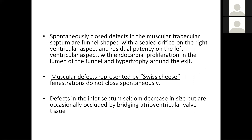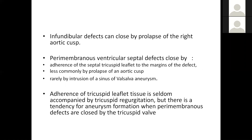Spontaneous closure in muscular trabecular septal defects is generally funnel-shaped, with a sealed orifice on the right ventricular septum and residual patency on the left ventricular septum; with endocardial proliferation, the lumen narrows and hypertrophies. Muscular defects of the Swiss-cheese variety do not close spontaneously. Defects in the inlet septum decrease in size and are occasionally occluded by bridging AV valve leaflets. Infundibular defects close by prolapse of the right aortic cusp, and perimembranous VSD closes by adherence of the septal tricuspid leaflet to the margin of the defect, less commonly by prolapse of an aortic cusp, or rarely by intrusion of sinus tissue.